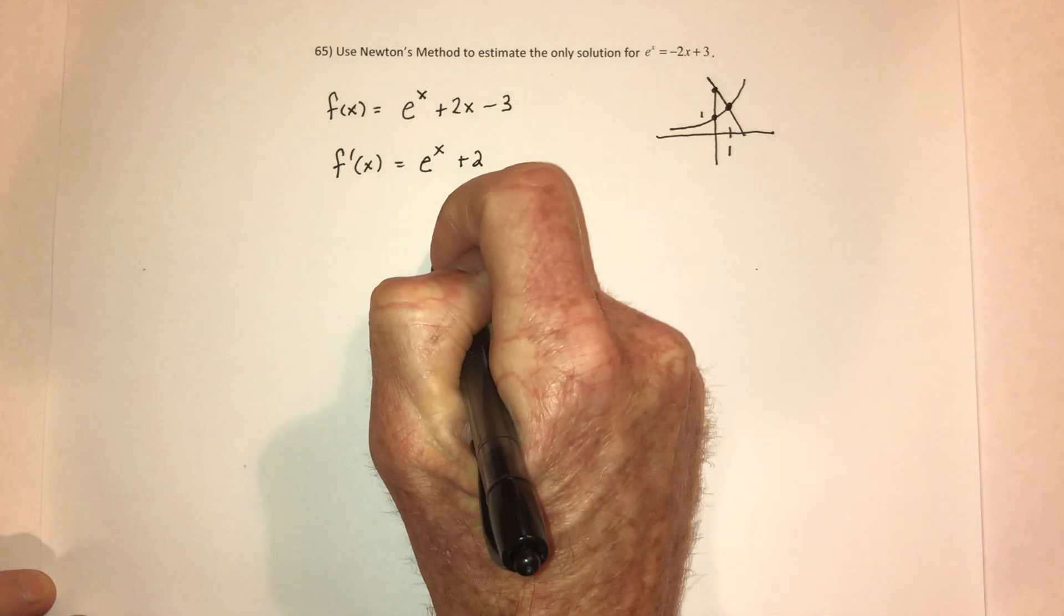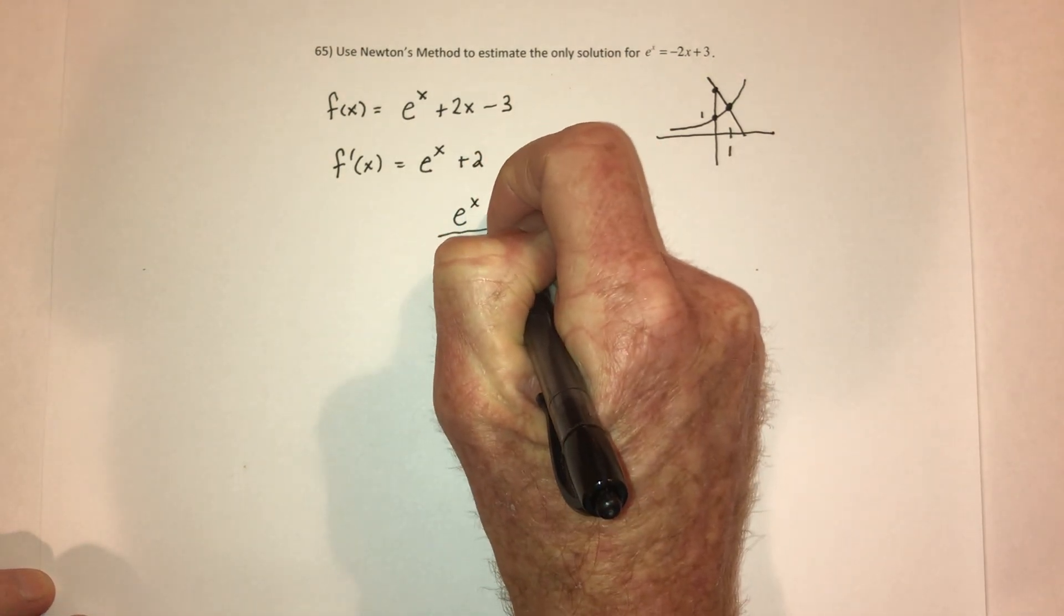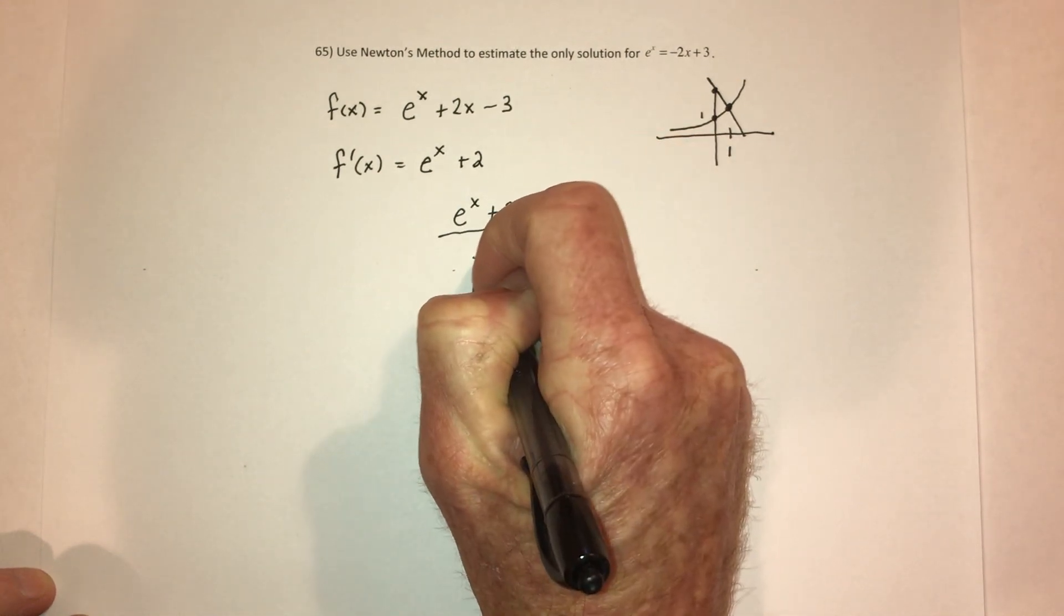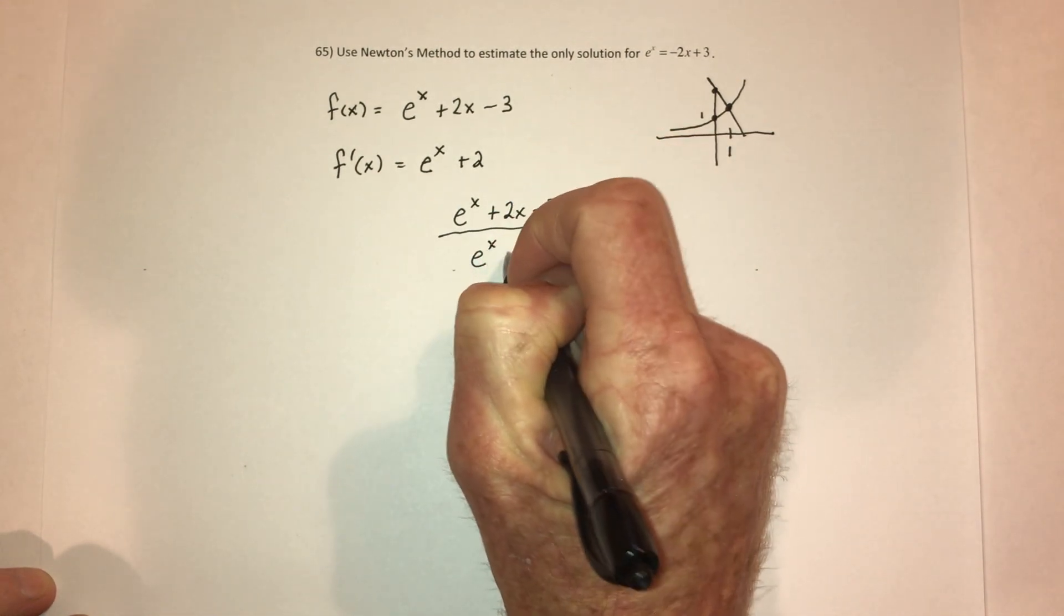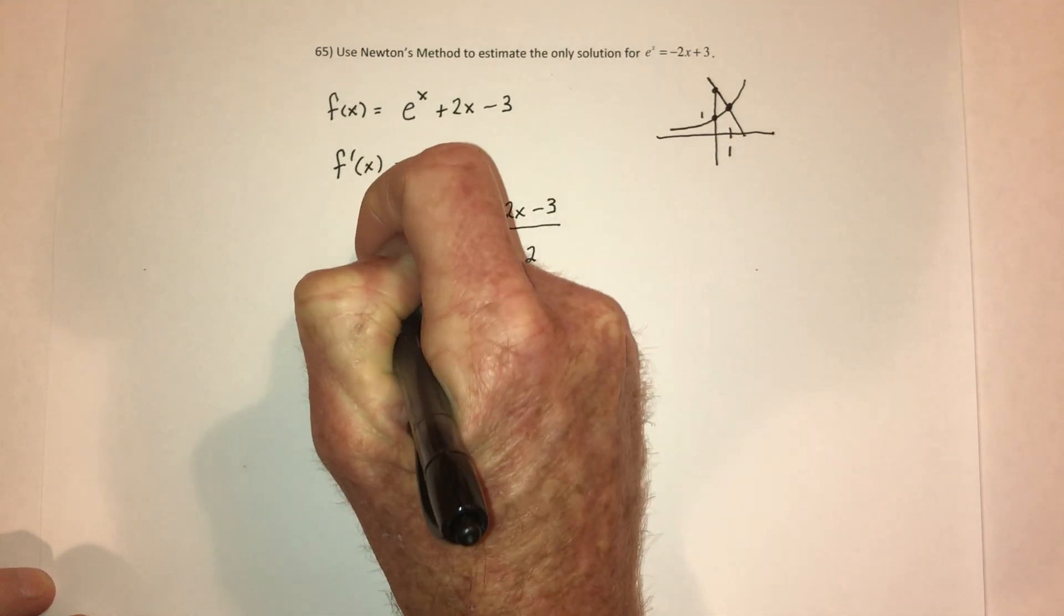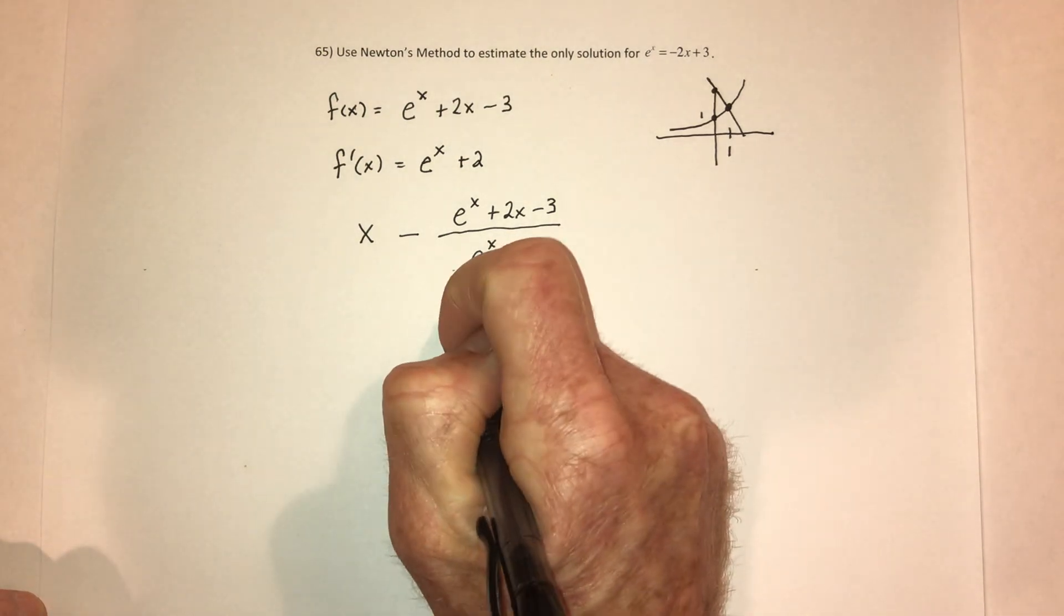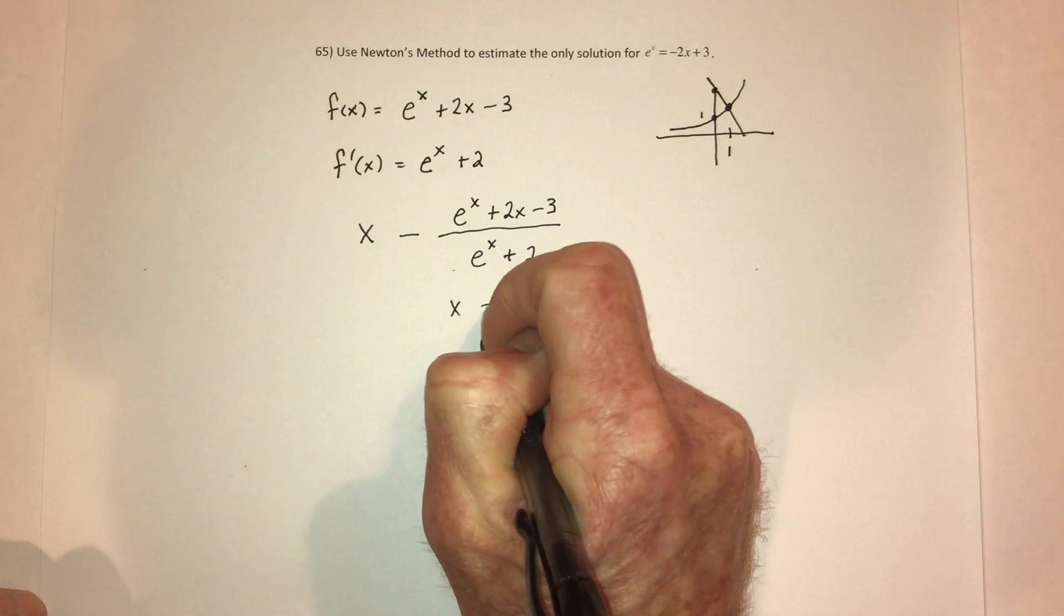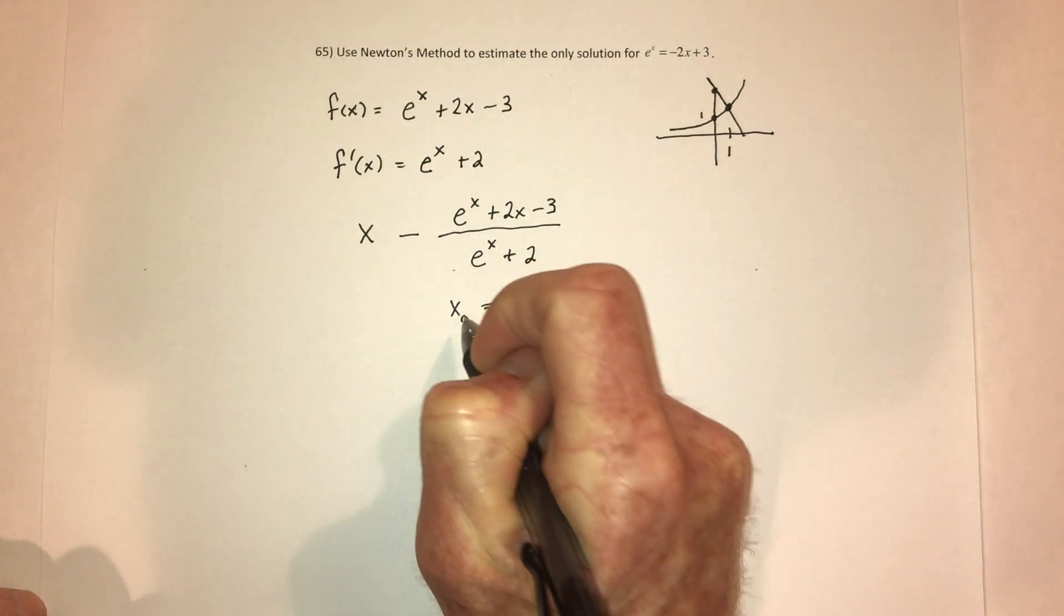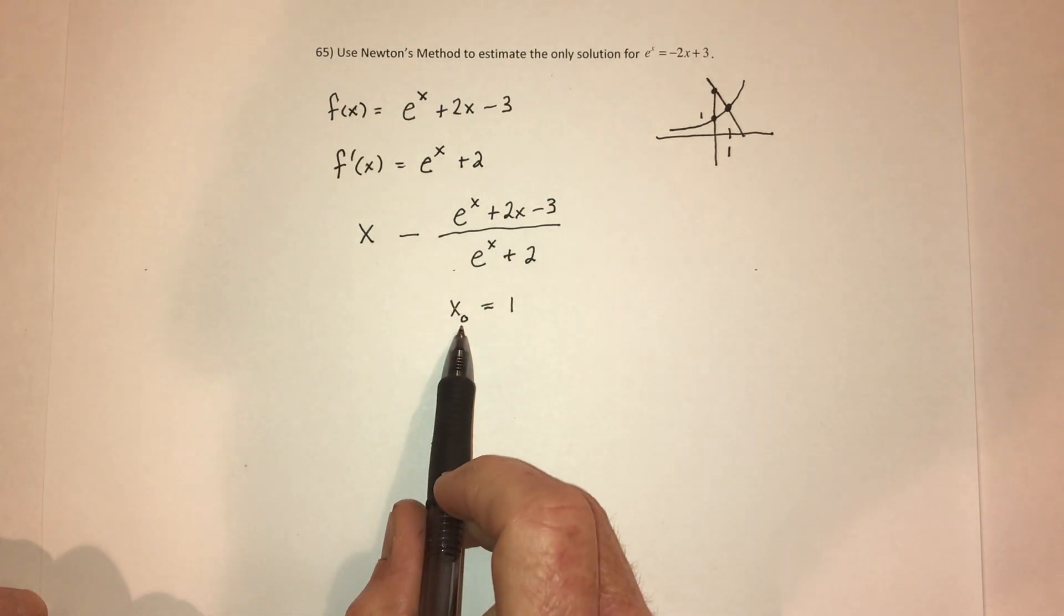And now you divide those two. The function divided by its derivative. And then in front, you just go x minus. Now my first guess was a 1. And this is called x0. In other words, this has been run through this little formula 0 times so far.